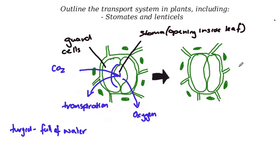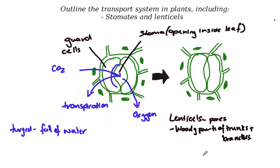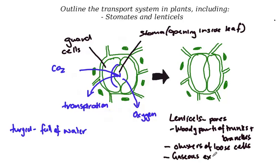If the stomata are preventing water loss, they're also going to prevent the exchange of gases as well. Lenticels, which are not drawn here, are pores that occur in the woody parts of the trunks and branches. The lenticels enable the tissue underneath the trunks and branches to also breathe, so they allow gaseous exchange in areas that aren't leaves. They appear as clusters of loose cells, and the gaseous exchange through lenticels occurs very slowly — much slower than through the guard cells.